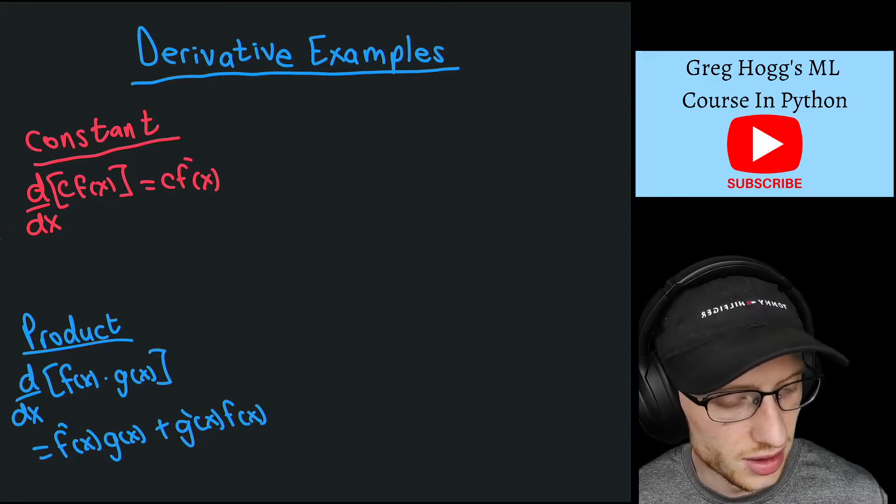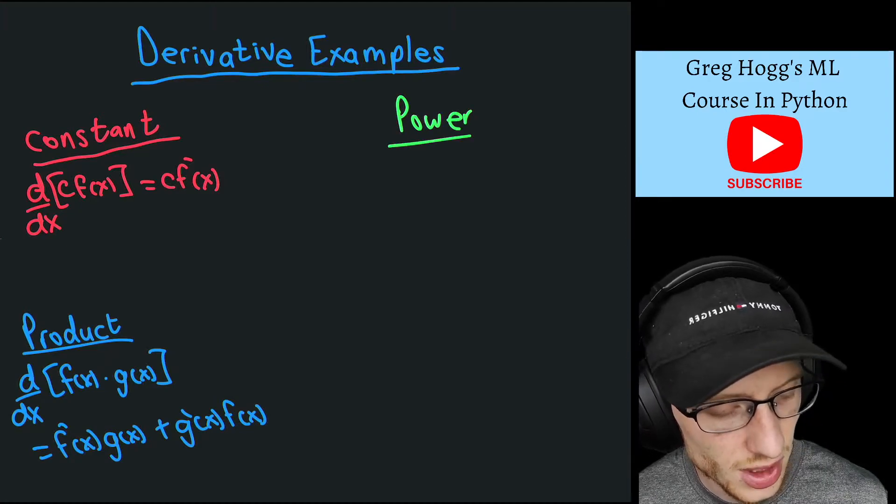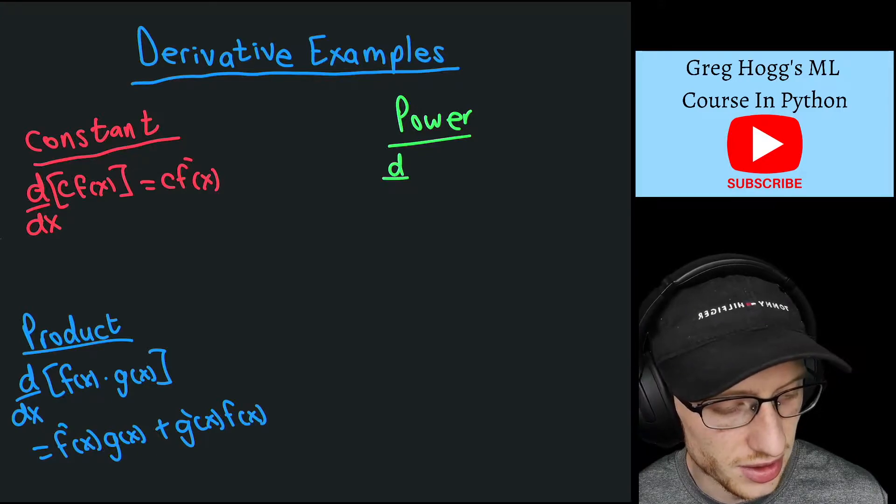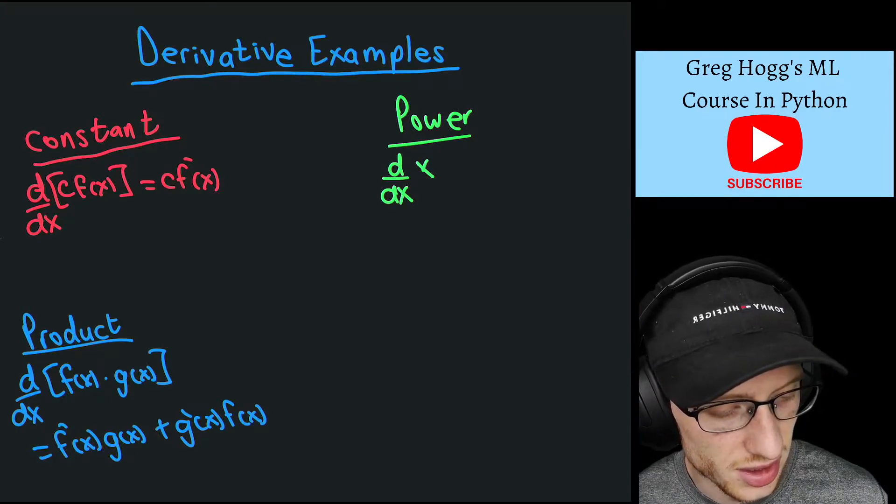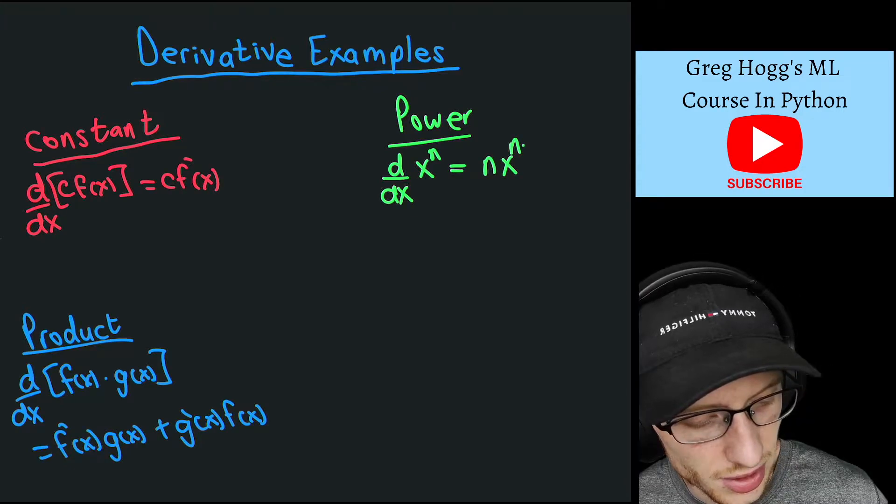We also had the power rule, which said if you have a function that looks like x to the n, so the d/dx of x^n is simply n times x^(n-1).